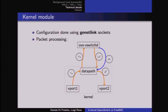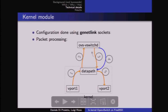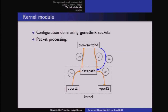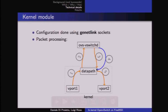The netlink socket is used to exchange information between the data path and control: packets that need processing, and modifications to the hash table such as inserting or removing rules.